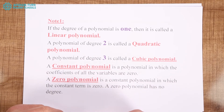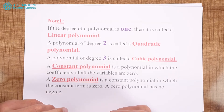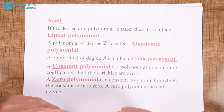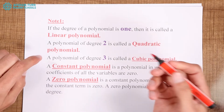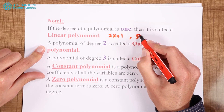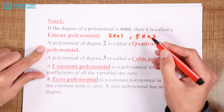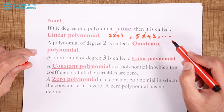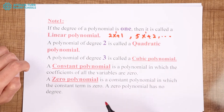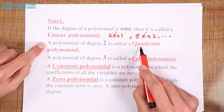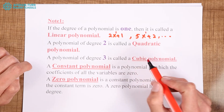Now, some important types of polynomials. If the degree of a polynomial is 1, then it is called a linear polynomial — every polynomial where the degree of the variable is 1. For example, 2x plus 1, or 5x plus 2. All of these are called linear polynomials. A polynomial of degree 2 is called a quadratic polynomial — a special name for polynomials of degree 2.